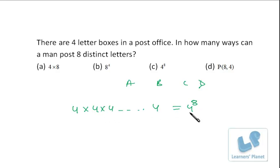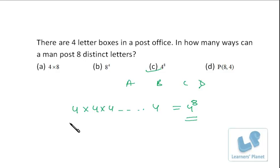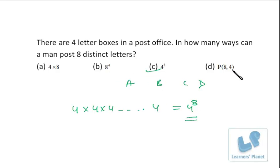A post box can accommodate more than one letter, but a single letter cannot go into more than one box. So for each letter we have four choices. For eight letters that gives 4×4×4... eight times = 4 raised to 8. Many students get confused and write the answer the other way around, because some books use shortcut rules. We are using plain common sense here.